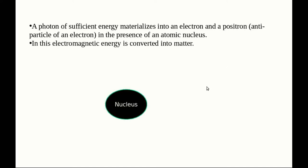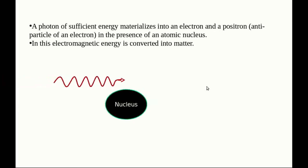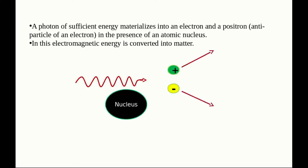In the presence of a nucleus, a photon of energy materializes into an electron, which has negative charge, and a positron, which is the antiparticle of the electron. Both particles move with some kinetic energy after the process.